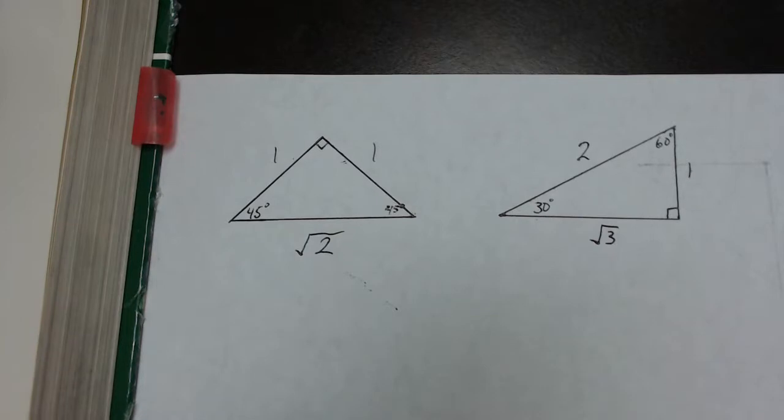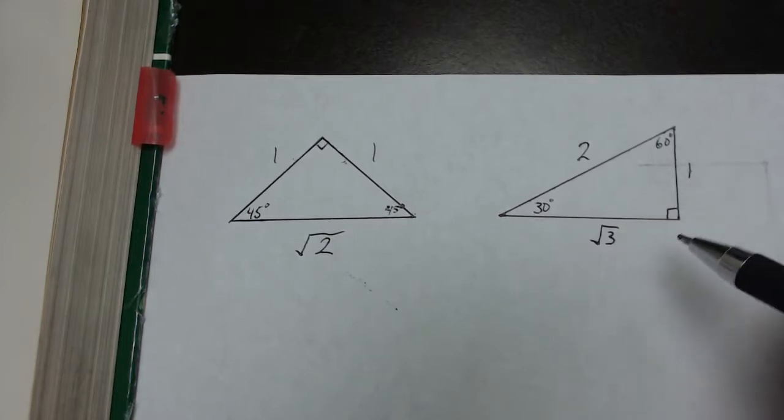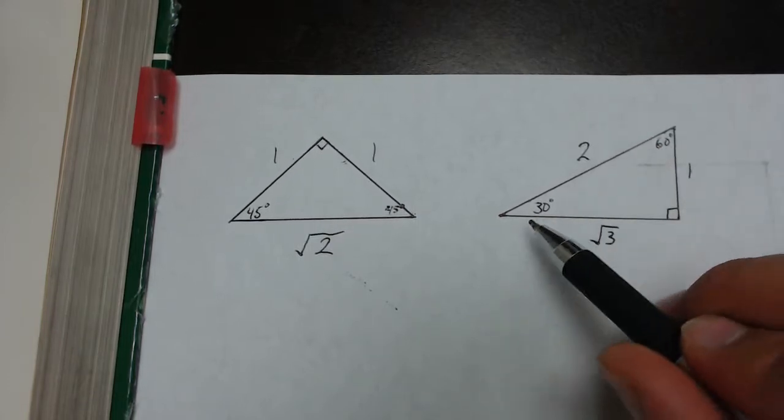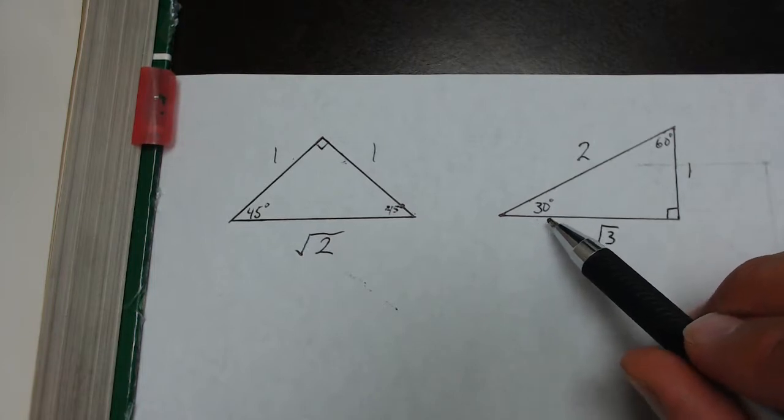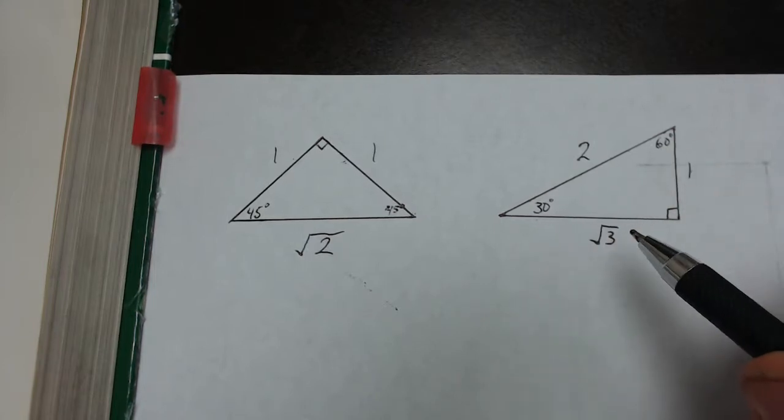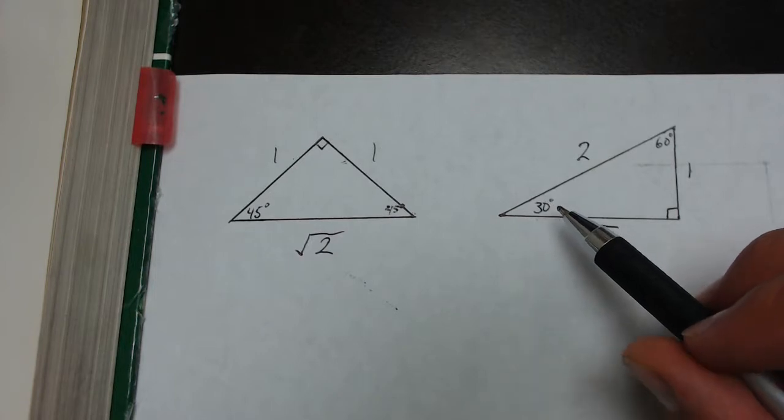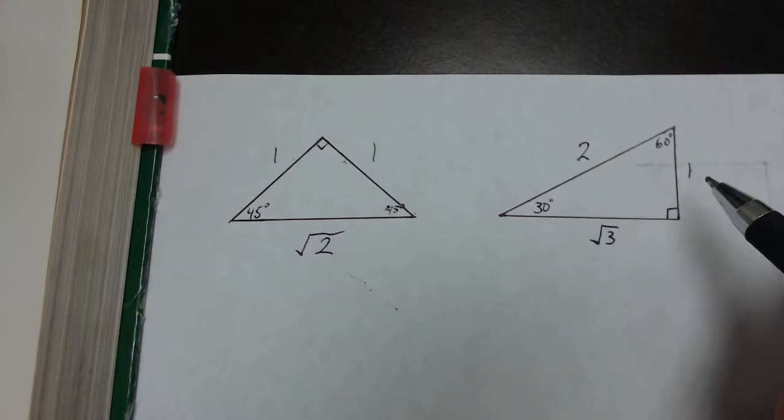30-60-90 can get a little confusing, and I use logic to help me construct it. I usually start by drawing a scalene right triangle with no sides equal. From there, I draw in the degrees. The small angle is always going to be 30, the big angle is always going to be 60. Then I remember the smallest angle gives me the smallest number, which is 1.